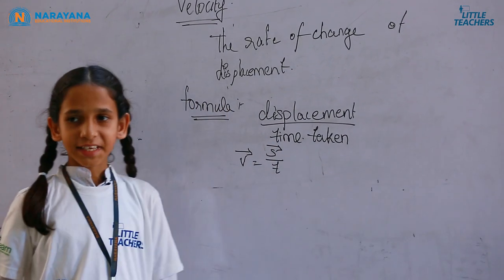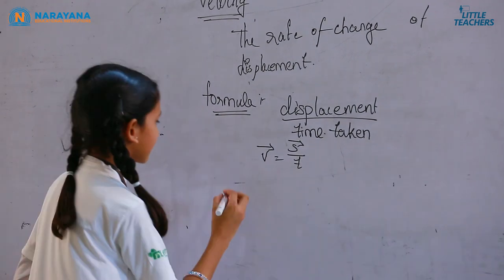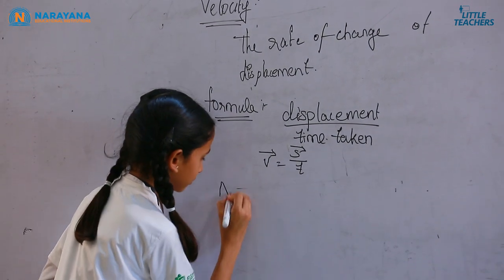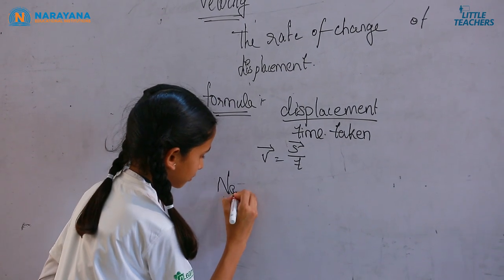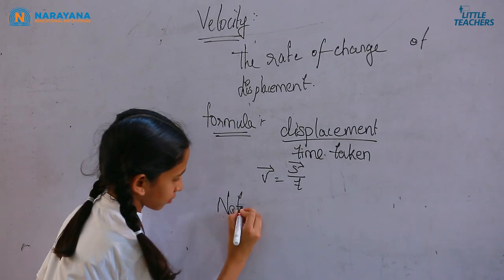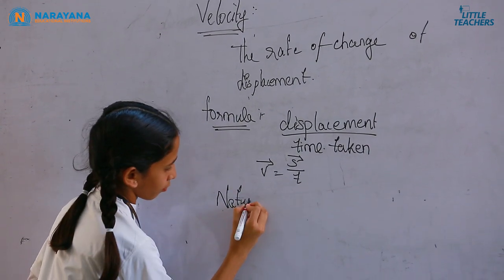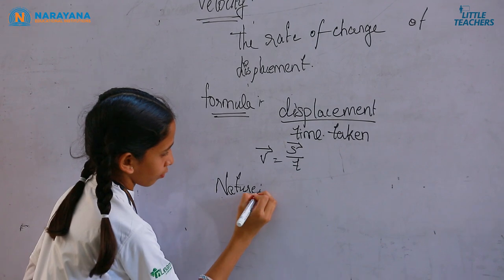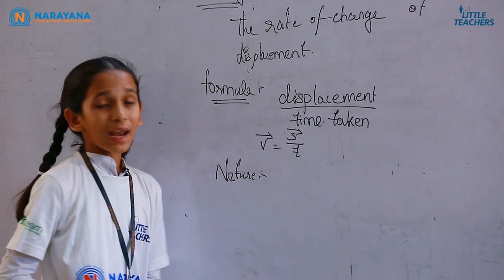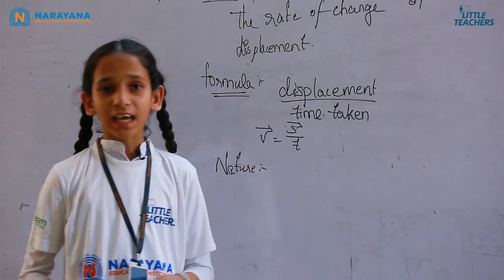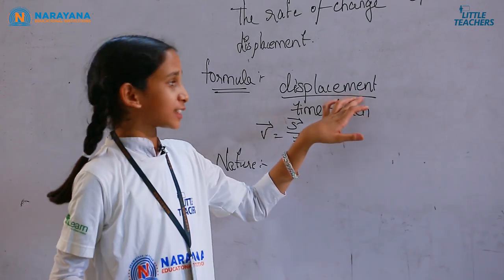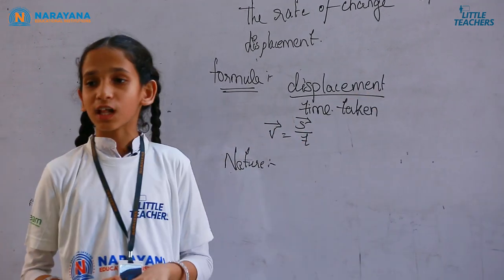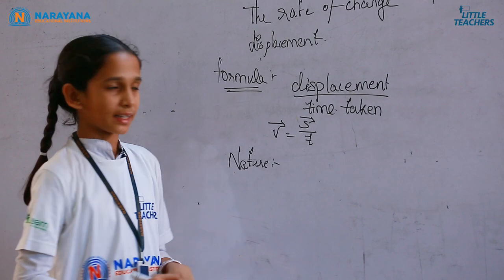Now, the nature of velocity: velocity is a vector quantity, as displacement is also a vector quantity.